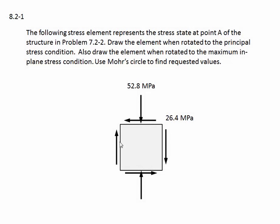Problem 8.2-1. The following stress element represents the stress state at point A of the structure in problem 7.2-2. Draw the element when rotated to the principal stress condition. Also, draw the element when rotated to the maximum in-plane shear stress condition. Use Mohr's circle to find the requested values. Here's the element — it was the same element we looked at in problem 8.1-2. This time we're going to use Mohr's circle to find the principal stresses and maximum in-plane shear stress conditions.